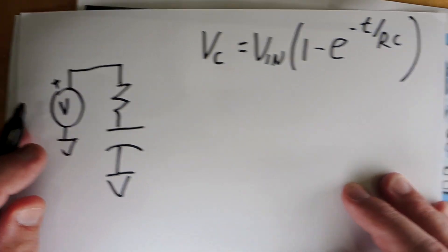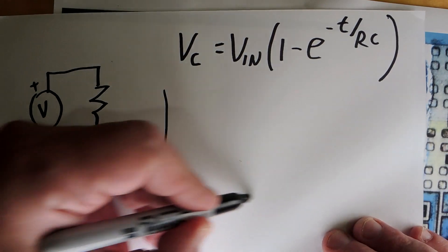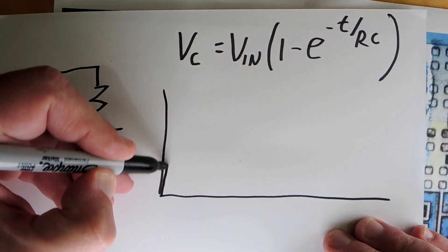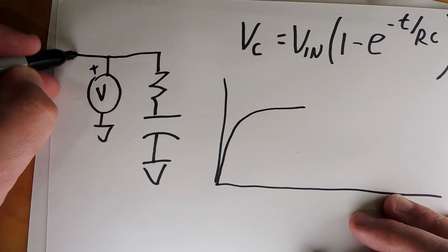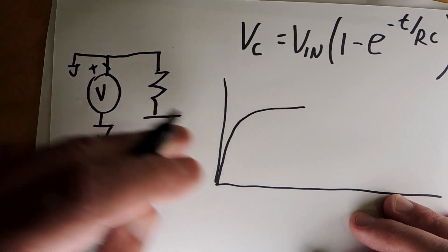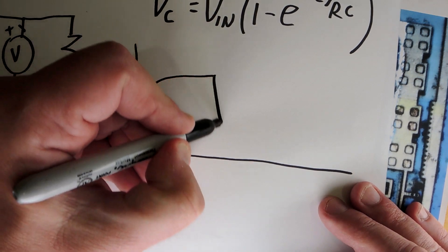And if you have a positive voltage here, what will happen is the capacitor will charge from zero volts in an exponential fashion. And then if you were to switch this to ground somehow, break the connection, it'll decay in an exponential fashion as well.